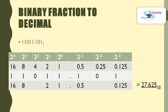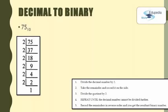The radix point is a general term that applies to all numbering systems. In base 10 notation — the decimal numbering system — the radix point is more commonly called the decimal point. In the binary numbering system — base 2 notation — it is called the binary point.